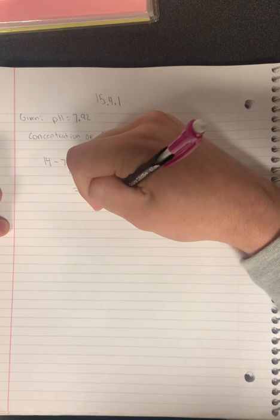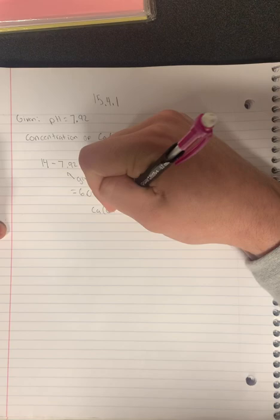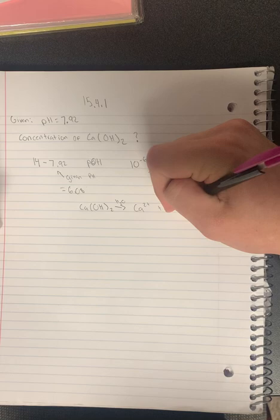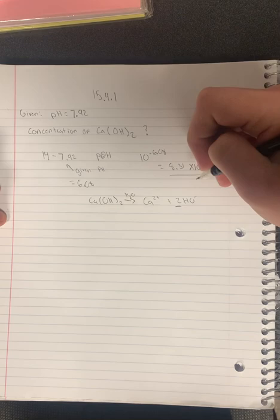Then when we write out the dissociation formula for Ca(OH)2, it looks like this: with H2O it yields Ca 2+ plus 2OH-. And since we have 2OH-, the concentration is going to be half of what we had before.